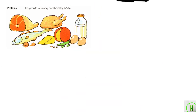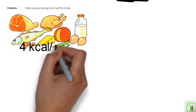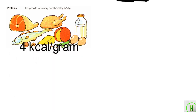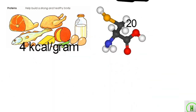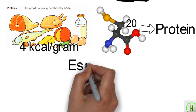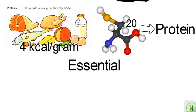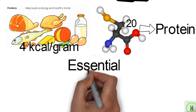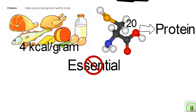Proteins provide 4 kilocalories per gram. There are 20 amino acids — organic compounds found in nature that combine to form proteins. Some amino acids are essential, meaning they need to be consumed. Other amino acids are non-essential because the body can make them.